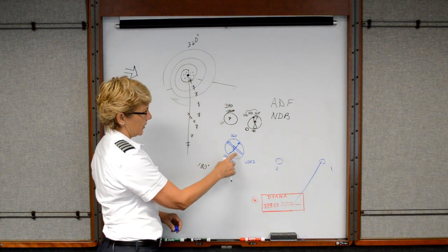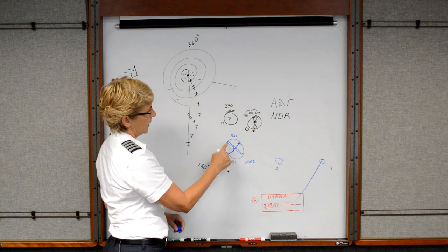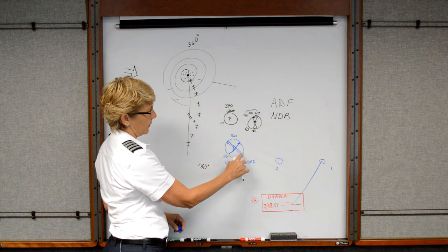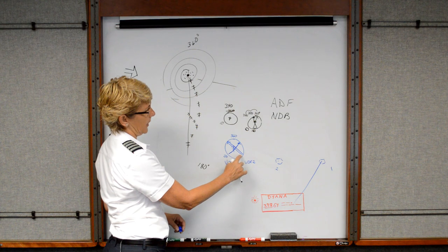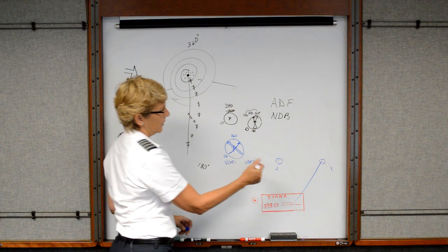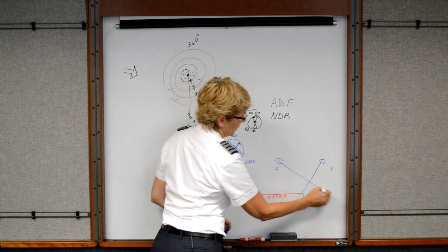And then in relation to station number two, it says that the tail of the needle shows my position. It shows that I am southeast of the station. So southeast is going to be in this direction.